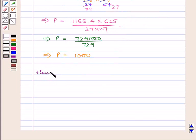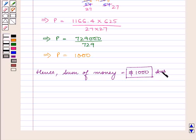Hence, the sum of money equals $1000, which is our answer. This completes our session. Hope you enjoyed the session. Thank you.